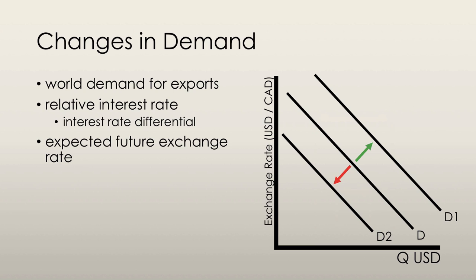The second factor that changes the demand for Canadian dollars is the Canadian interest rate relative to the foreign interest rate. The higher the interest rate that people can make on Canadian assets compared with foreign assets, the more Canadian assets they will actually buy. The Canadian interest rate differential is the Canadian interest rate minus the foreign interest rate. If the Canadian interest rate rises and the foreign interest rate remains the same, the Canadian interest rate differential increases and there is a greater demand for Canadian assets, thus there is a greater demand for Canadian dollars. If the Canadian interest rate differential decreases, there is a decrease in the demand for Canadian dollars.